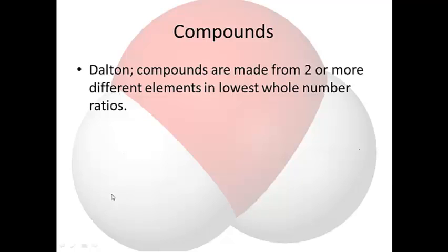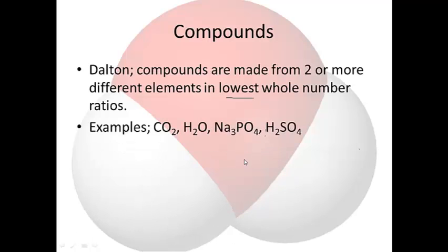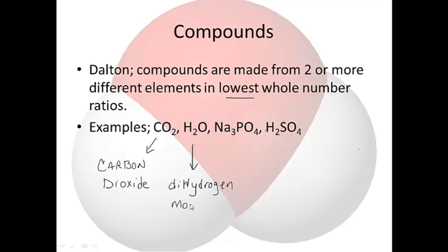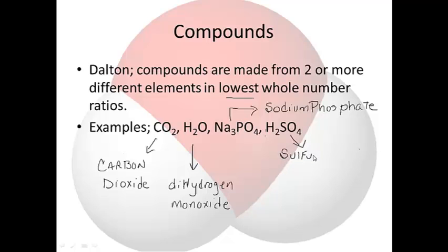Dalton stated that compounds are made from two or more different elements in the lowest whole number ratio. For example, every one of these are compounds. This one is called carbon dioxide. This is dihydrogen monoxide — write these down please. This is sodium phosphate, and notice that the phosphate end is one of your polyatomics, as is the sulfate. And this is called sulfuric acid, which you will be introduced to shortly.